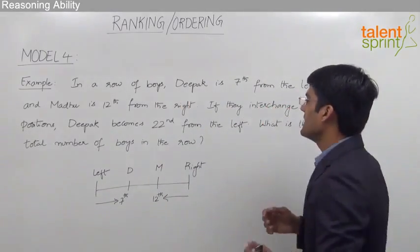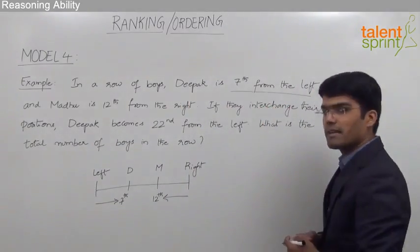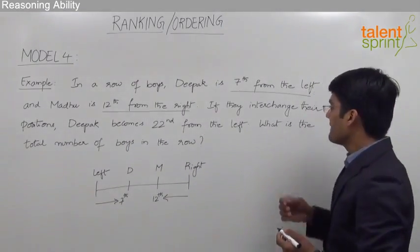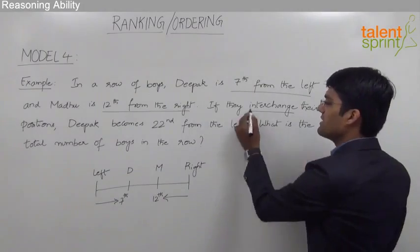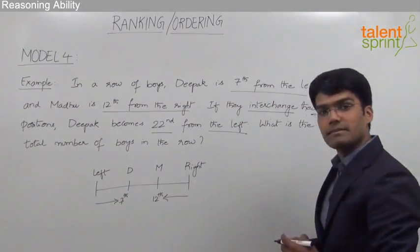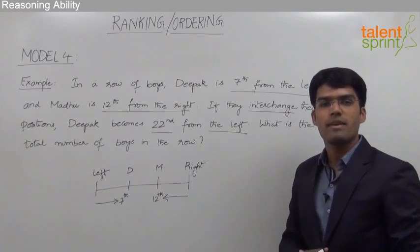In a row of boys, Deepak is 7th from the left end and Madhu is 12th from the right end. If they interchange their positions, Deepak becomes 22nd from the left end. What is the total number of boys in this row?